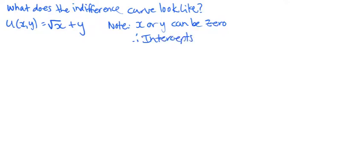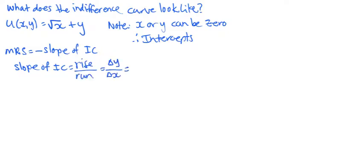The MRS is the negative of the slope of the indifference curve. So, returning to fundamentals, the slope of the indifference curve is rise over run, or change in y over change in x. Using our utility function, we can express this as change in utility over change in x, multiplied by change in y over change in U. The first term is just marginal utility of x, and the second term is 1 over the marginal utility of y.